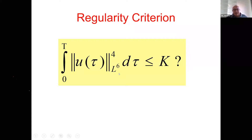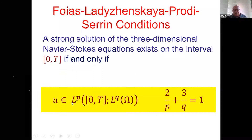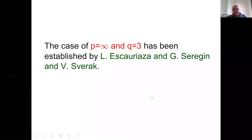This is part of a family of criteria known as the Prodi-Serrin conditions, sometimes called the Ladyzhenskaya-Prodi-Serrin conditions, with related work by Foiaş. If the weak solution starting from initial data in H^1 belongs to L^p in time and L^q in space, then the strong and weak solutions coincide. The case p=4, q=6 is one particular case; the case p=5, q=3 was done by Escauriaza, Seregin, and Šverák.